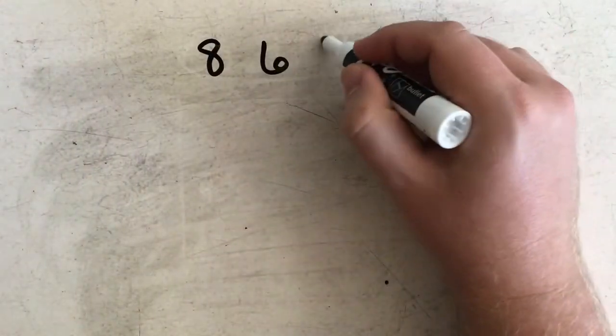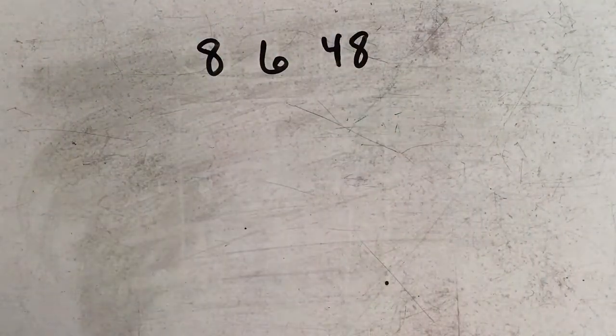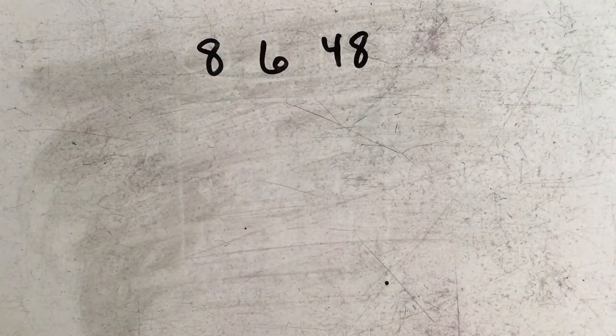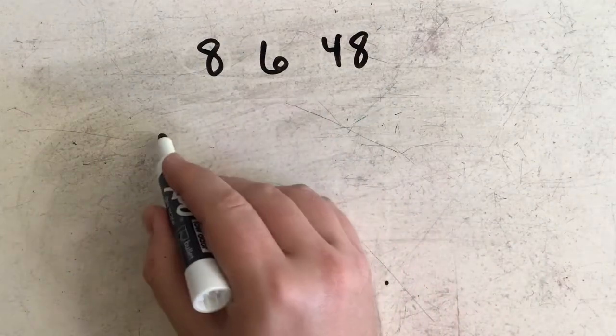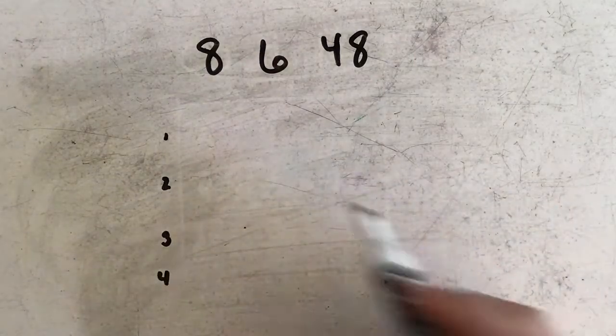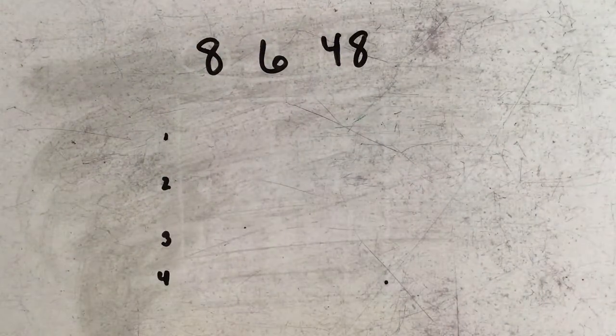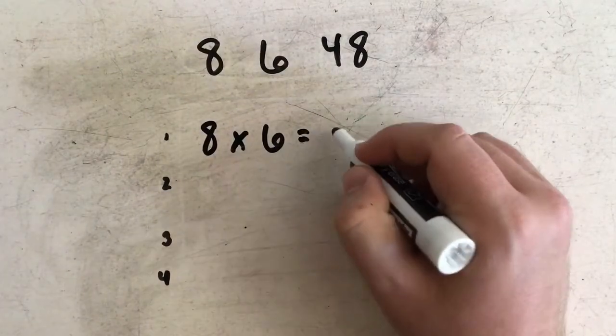8, 6, and 48. So again, these three numbers share a connection with each other, where I can write up to 4 multiplication and division sentences using these three numbers. So I could say that 8 times 6 is equal to 48.